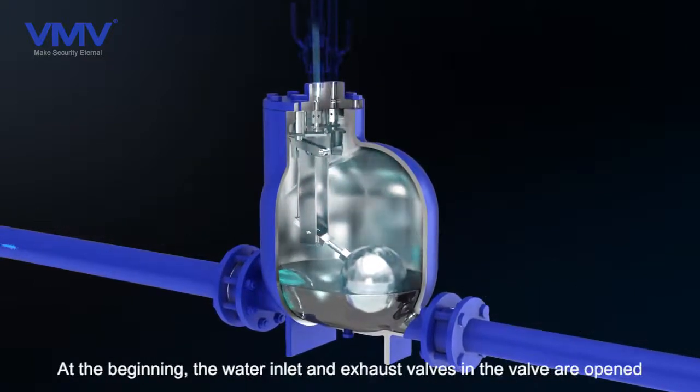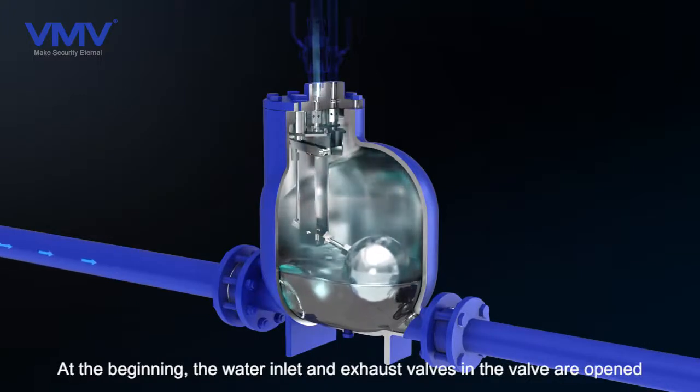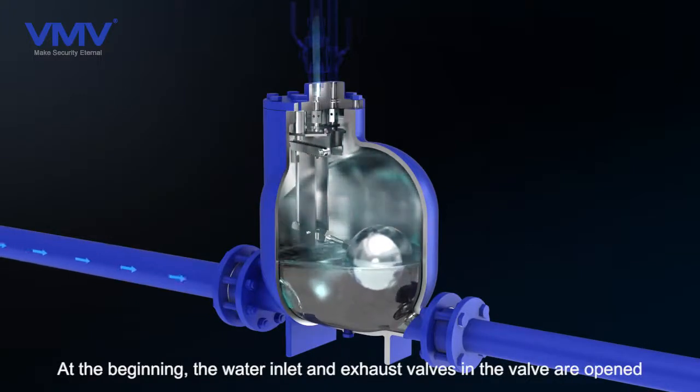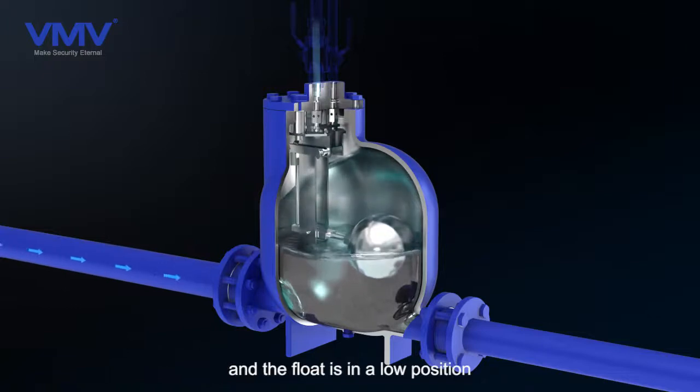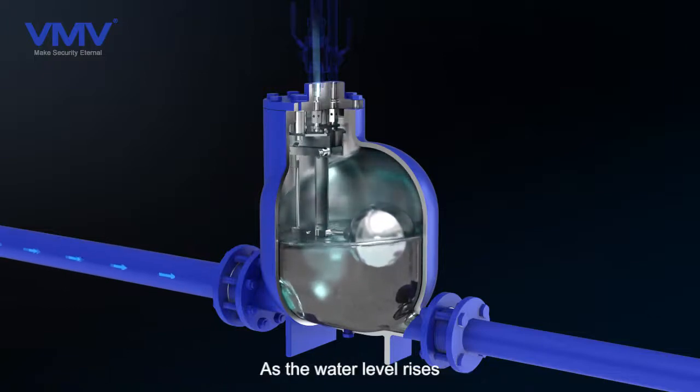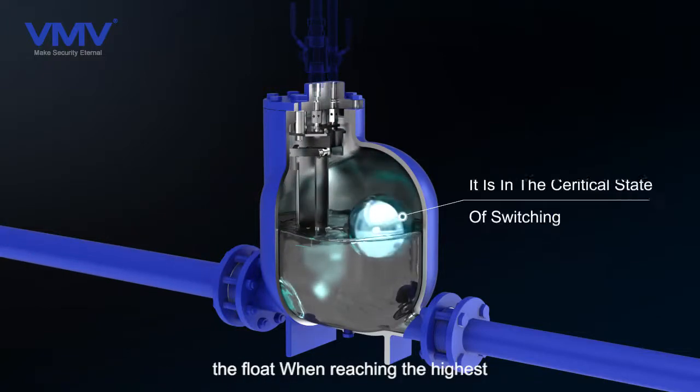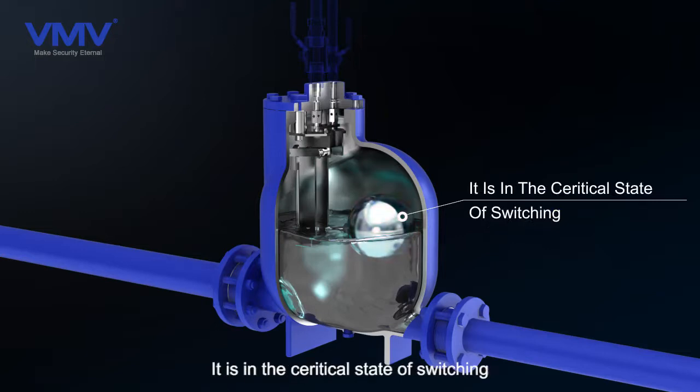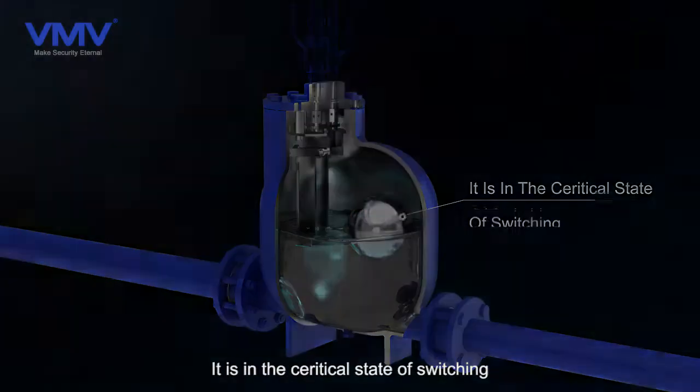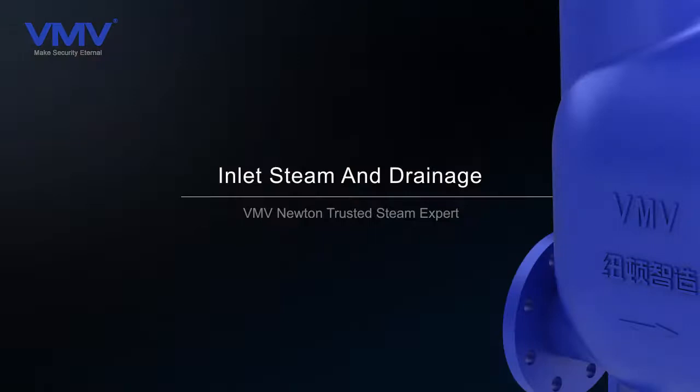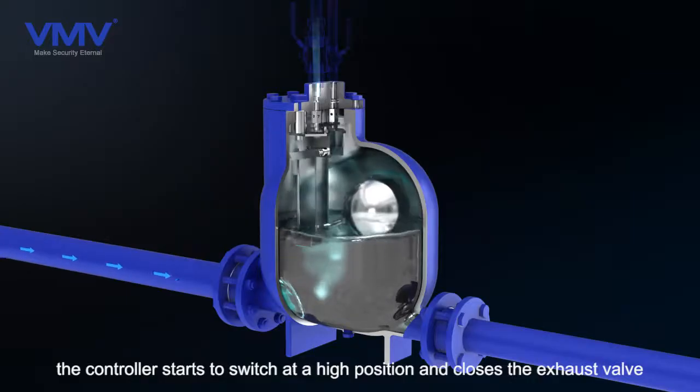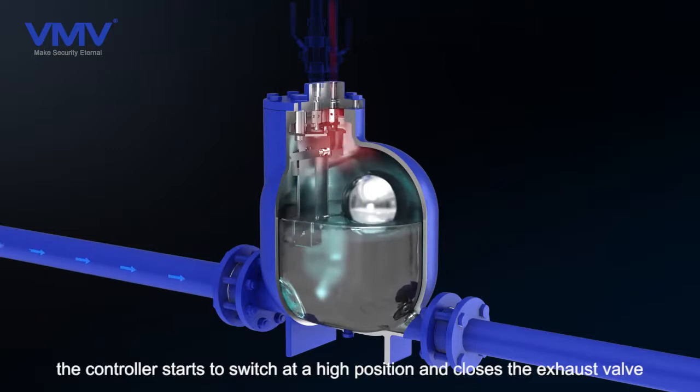At the beginning, the water inlet and exhaust valves in the valve are open, and the float is in a low position. As the water level rises, the float reaches the highest position, reaching the critical state of switching inlet steam and drainage. The controller starts to switch at this high position.